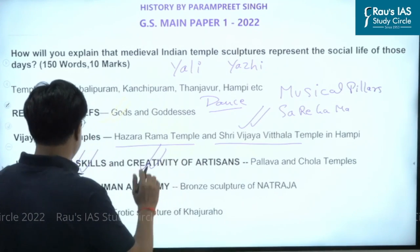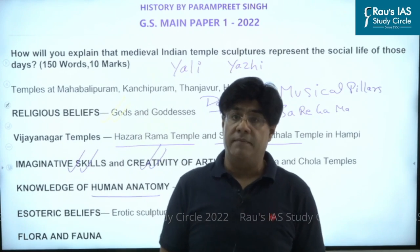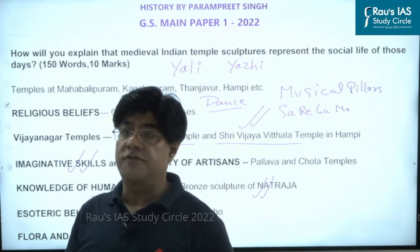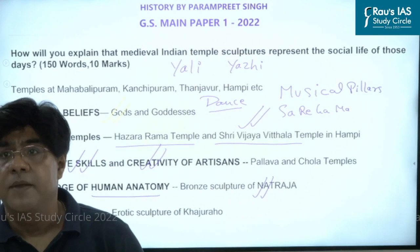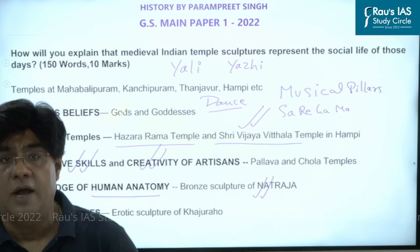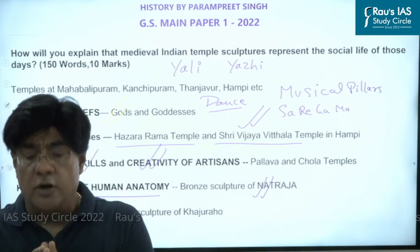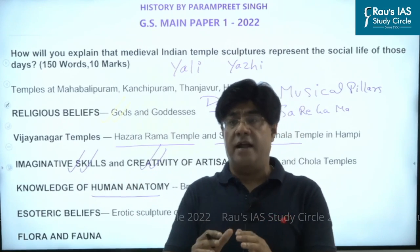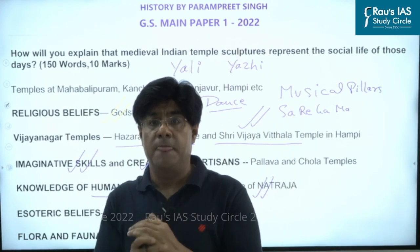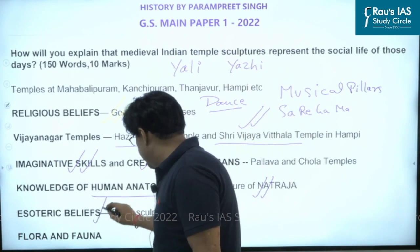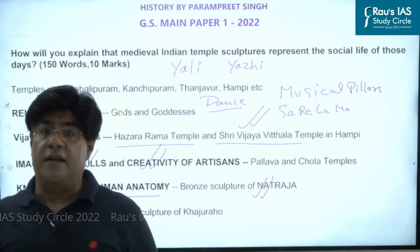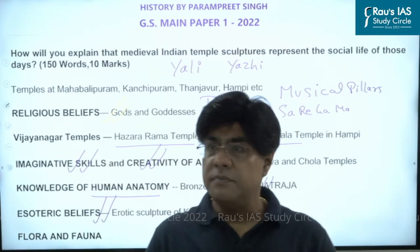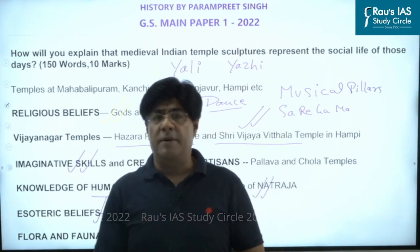Apart from that, these sculptures also give us knowledge of human anatomy. Here you can give the example of the bronze sculpture of Nataraja — the dancing form of Shiva. The bronze sculptures of Nataraja found especially during the Chola period show great anatomical clarity, indicating the artisans had excellent knowledge of human anatomy. Another thing these sculptures tell us is about the esoteric beliefs of the people. In this context we can give the example of the erotic sculptures found on the Khajuraho temples, built by the Chandela rulers in present-day Madhya Pradesh.